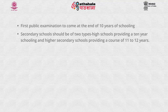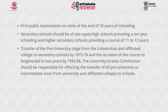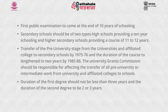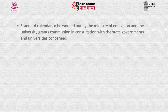Secondary schools should be of two types: high schools providing 10 years of schooling and higher secondary schools providing a course of 11 to 12 years. Transfer of the pre-university stage from universities and affiliated colleges to secondary schools should be completed by 1975-76, with the duration of the course lengthened to 2 years by 1985-86. The duration of the first degree should not be less than 3 years and the second degree 2 or 3 years. Standards are to be worked out by the Ministry of Education and the University Grants Commission in consultation with state governments and universities.